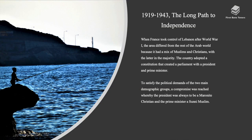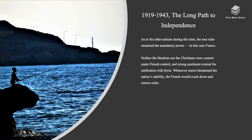First, let's take a look at the long path to independence. Between 1919 and 1943, when France took control of Lebanon after the First World War, the area differed from the rest of the Arab world because it had a mix of Muslims and Christians, with the latter in the majority. The country adopted a constitution that created a parliament with a president and prime minister. To satisfy the political demands of the two main demographic groups, a compromise was reached whereby the president was always to be Maronite Christian and the prime minister a Sunni Muslim. As in other nations during this time, the true ruler remained the mandatory power — in this case France. Neither the Muslims nor the Christians were content under French control and strong sentiment existed for unification with Syria. Whenever unrest threatened the nation's stability, the French would crack down and restore order.